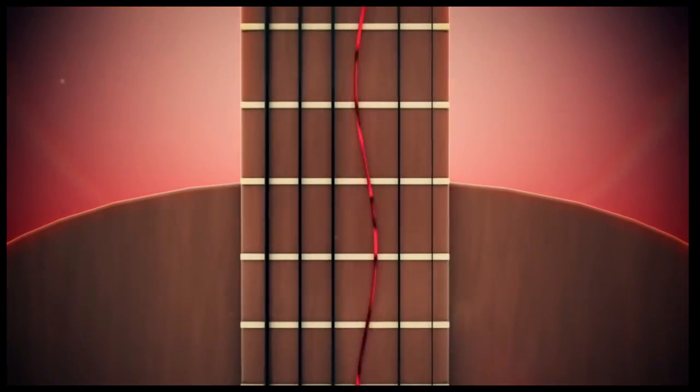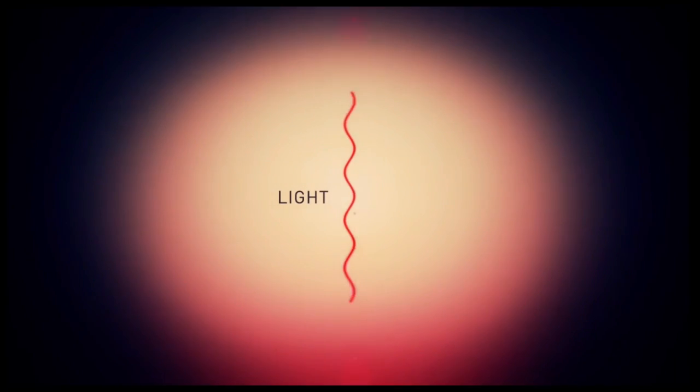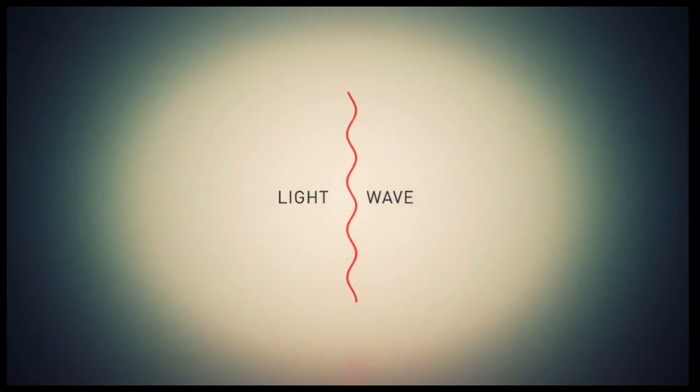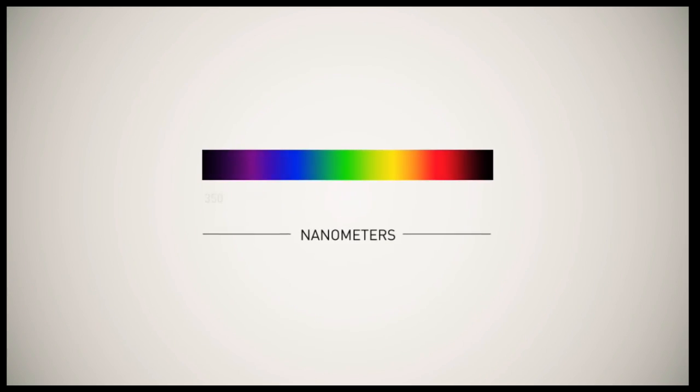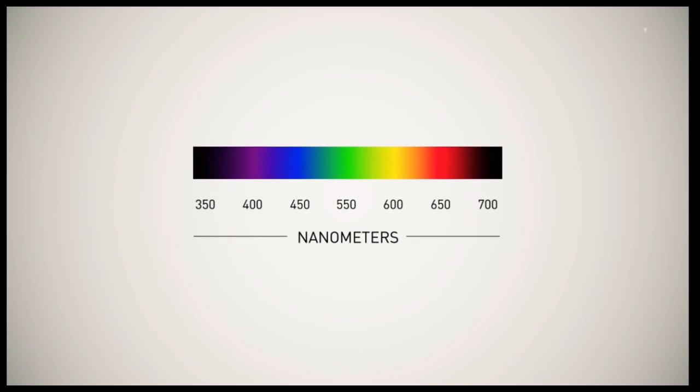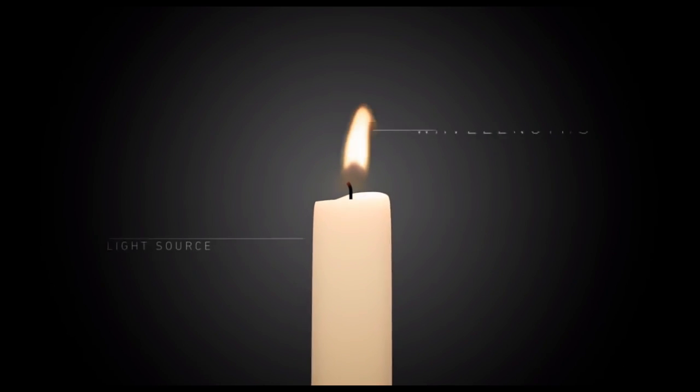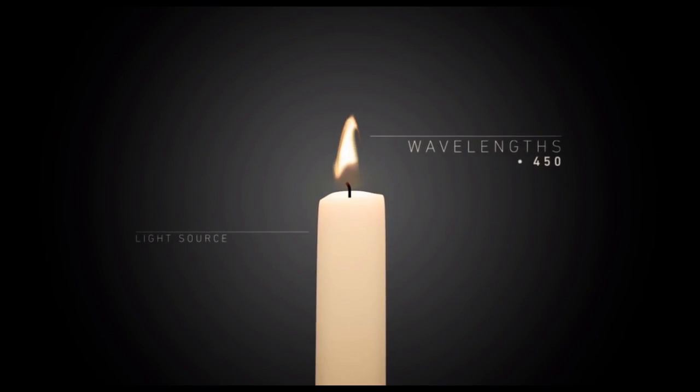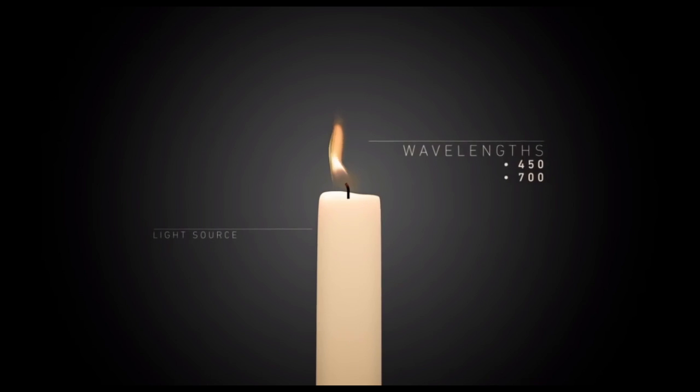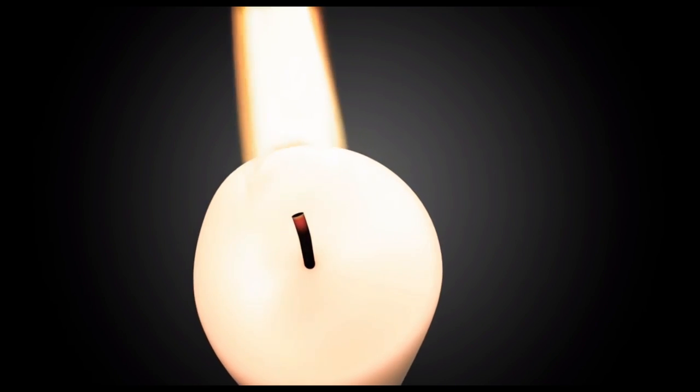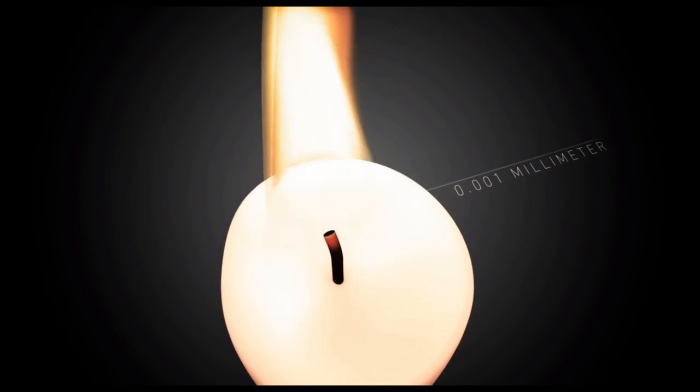Just like the sound waves on the guitar string, light can also be thought of as a wave. Each color of light has a different frequency and every frequency corresponds to a different wavelength, which is the distance between the neighboring peaks of the wave. Visible light has wavelengths ranging from 450 to 700 nanometers, a size smaller than one thousandth of a millimeter.